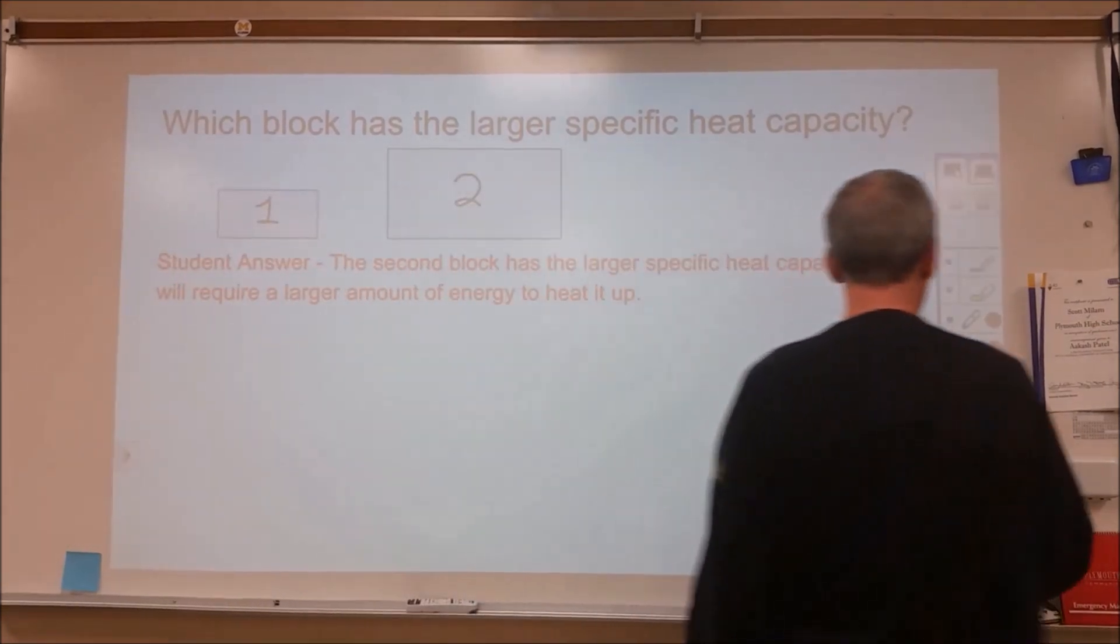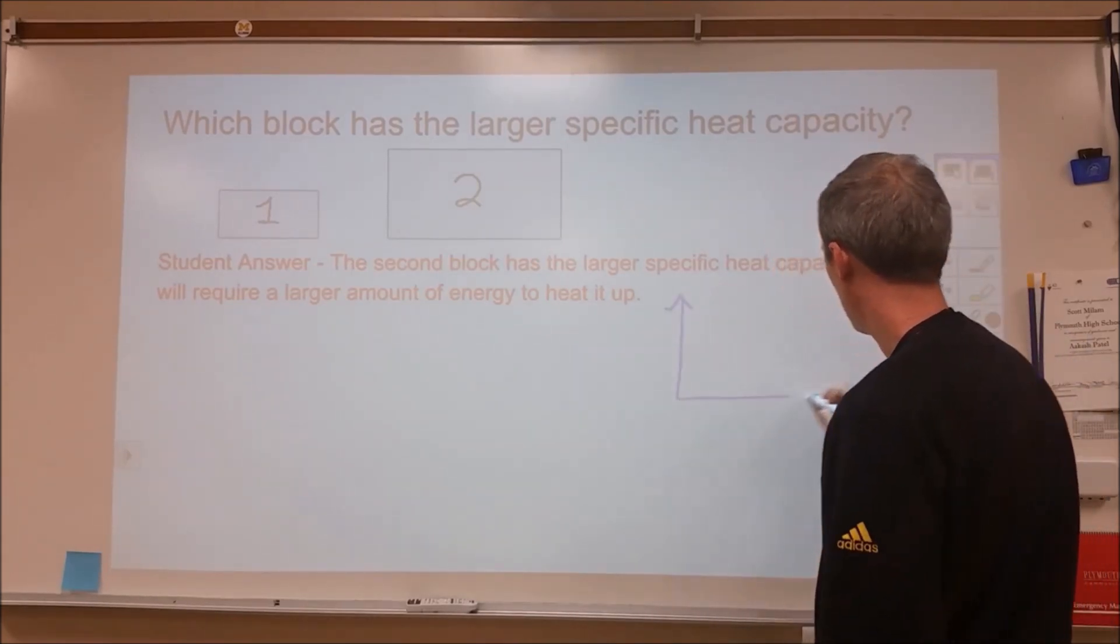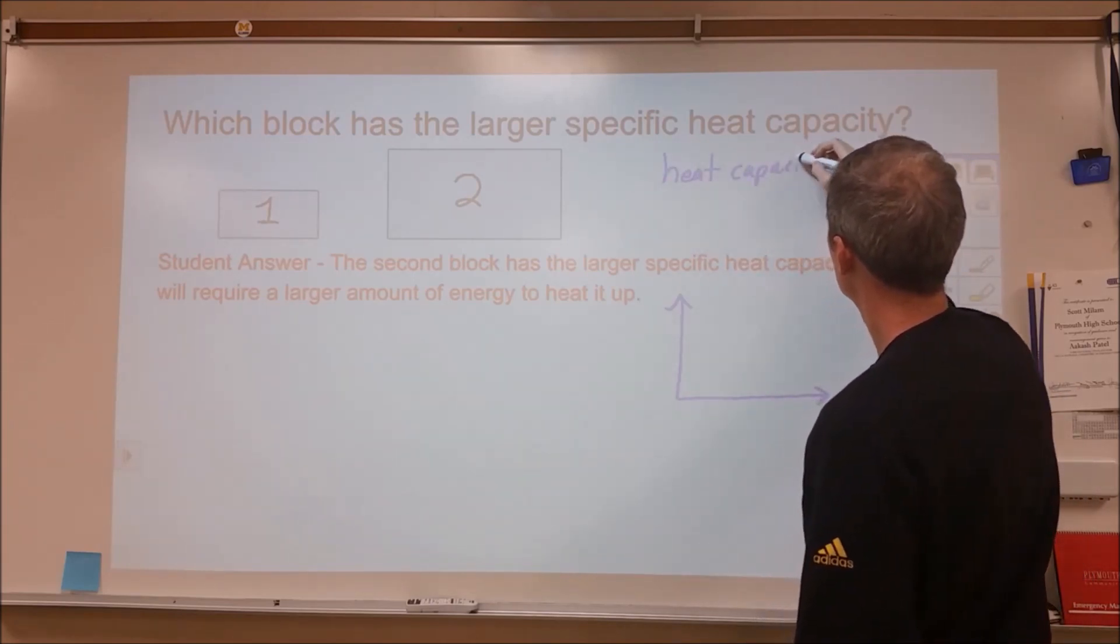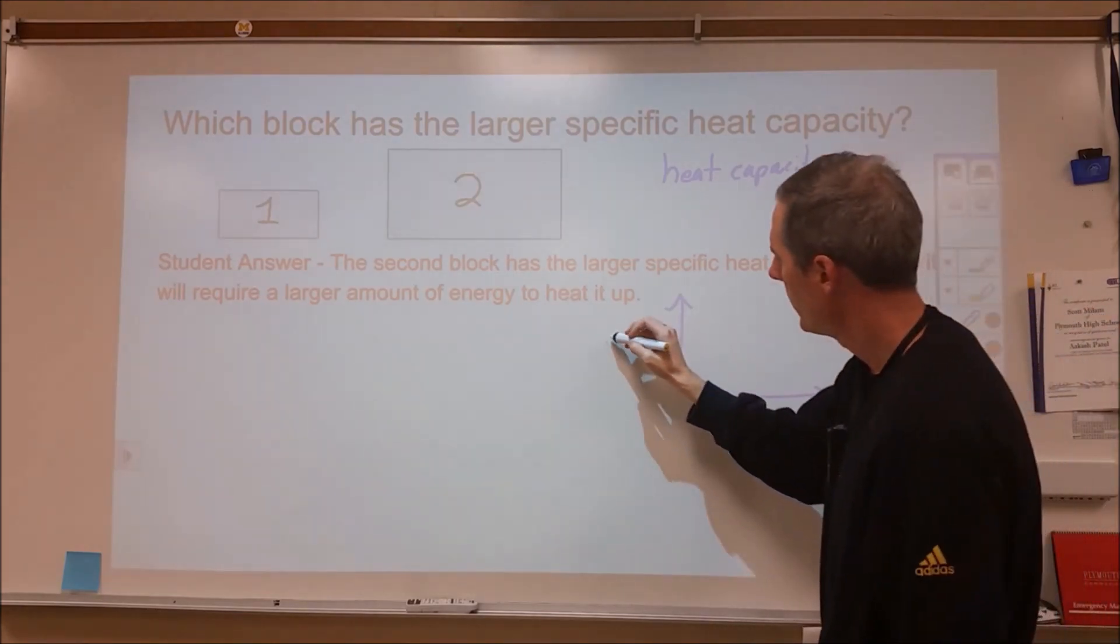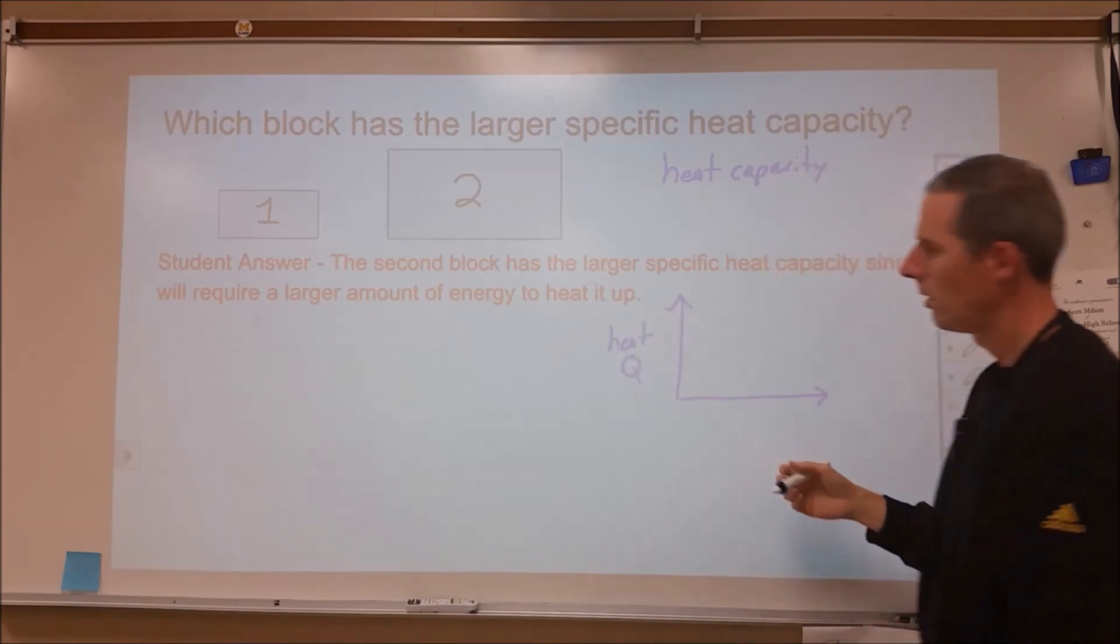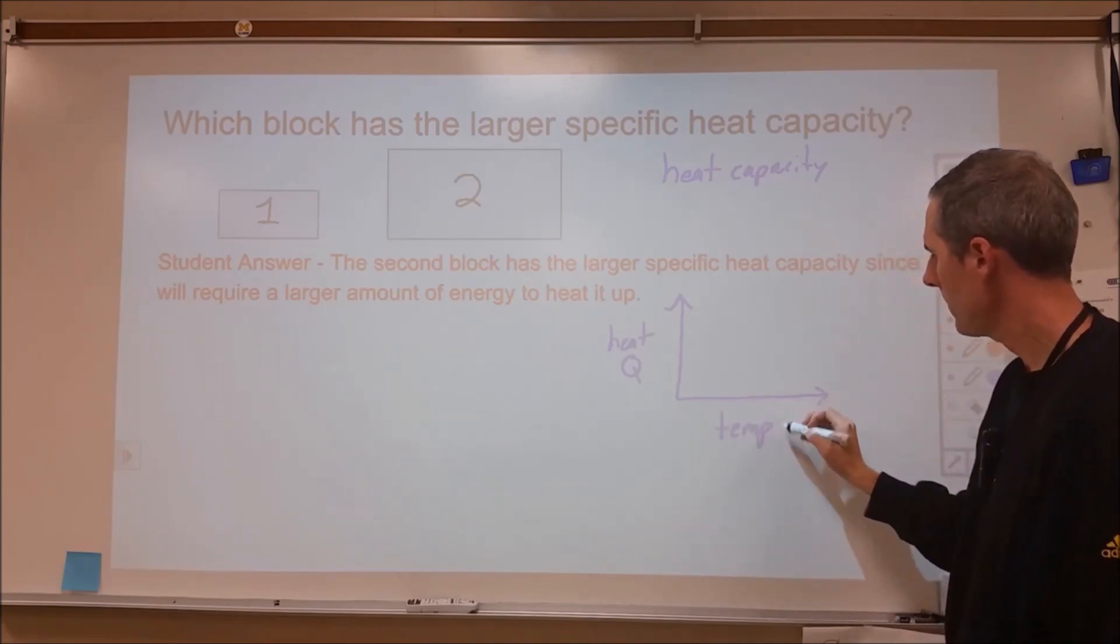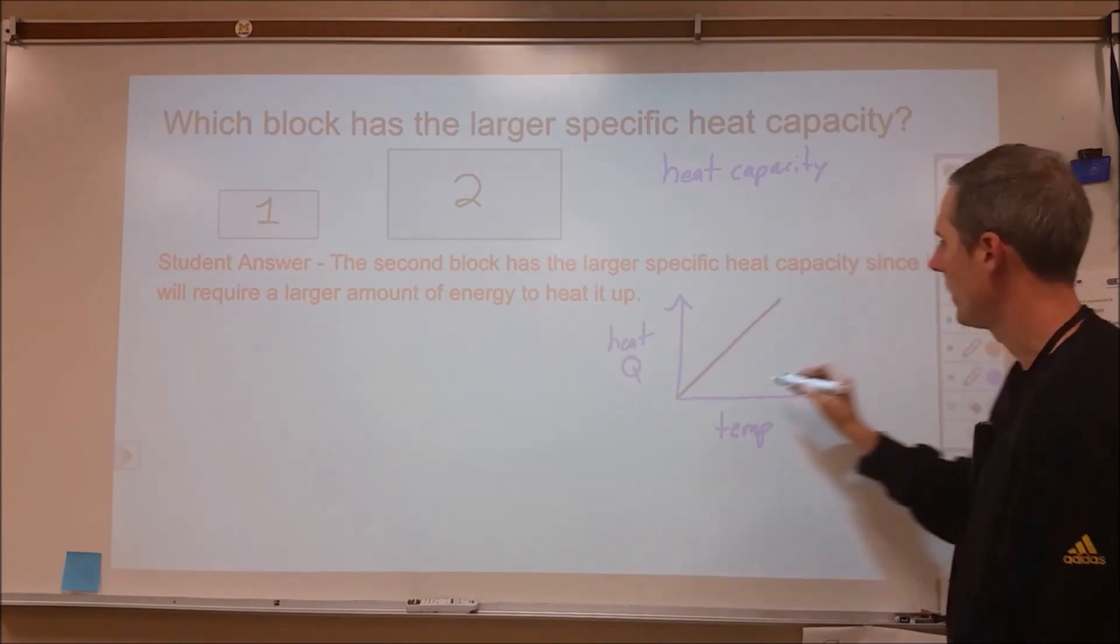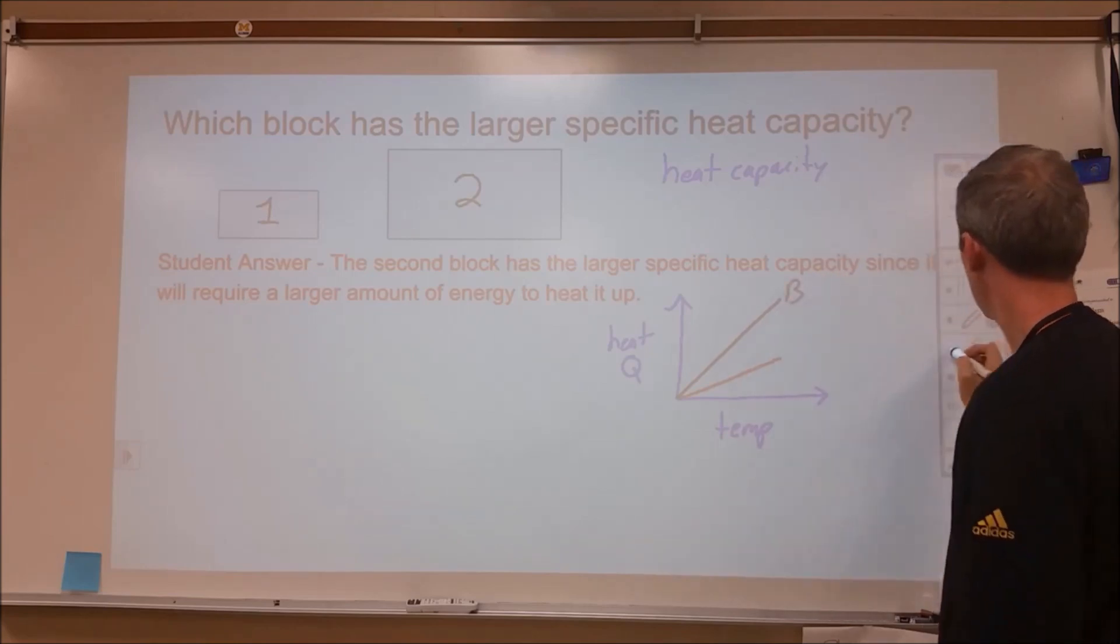When we're looking at specific heat capacity, we're really deriving that from something called heat capacity, or at least starting with this experimental evidence. When we're looking at heat or Q being put into a particular substance and then we track its temperature, what we'll find is that for different substances they will change differently as more energy is supplied to them.